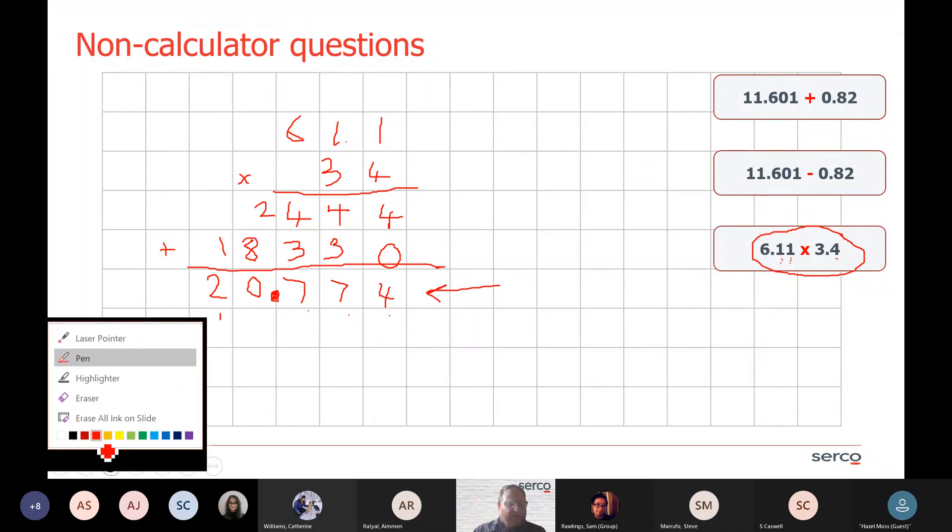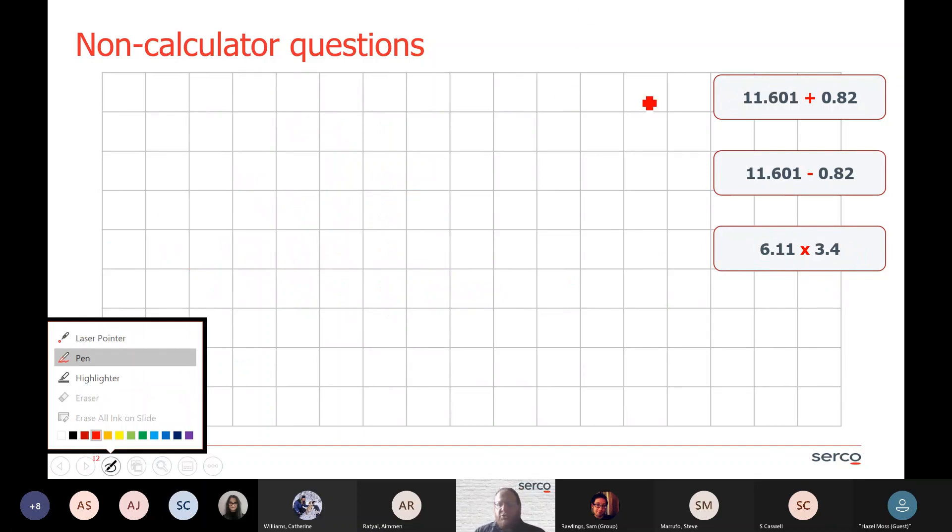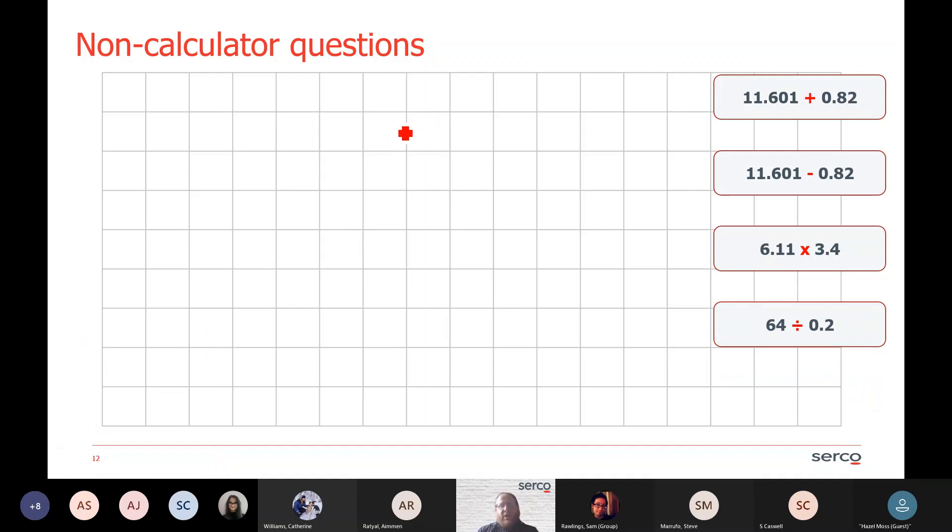The final thing I want to show you is looking at division, long division or short division. There are two different types and two different ways of addressing this. My first question is 64 divided by 0.2. So I'm dividing by a decimal point. What's the easiest thing to do here is get rid of that decimal point by finding a way that we can eradicate it. What I could do is multiply both of those numbers by 10. If I did that, it would give me 640 divided by 2. So I've changed my sum from 64 divided by 0.2 to 640 divided by 2.